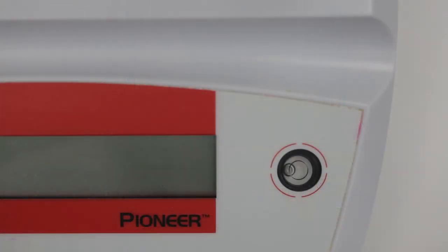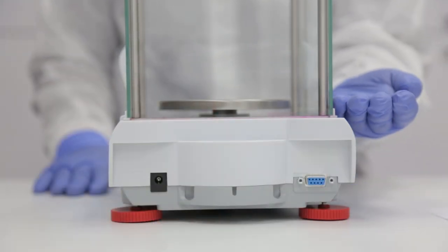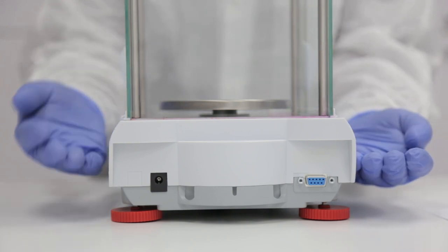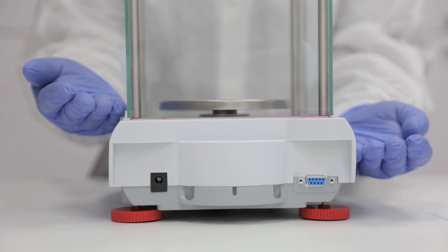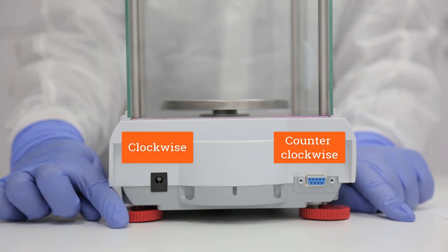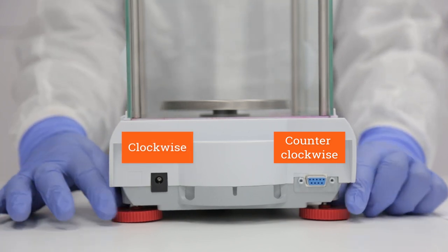Now, if the air bubble is in the nine o'clock position, this means that the left side of the balance is too high. This time, we need to lower the left side of the balance and raise the right side. To achieve this, we will turn the left back foot counterclockwise and the right back foot clockwise simultaneously until the air bubble has been centered in the circle.